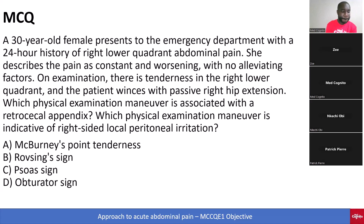Which physical examination maneuver is associated with a retrocecal appendix? Which physical examination maneuver is indicative of right-sided local peritoneal irritation? A, McBurney's point tenderness. B, Rovsing's sign. C, Psoas sign. D, obturator sign.